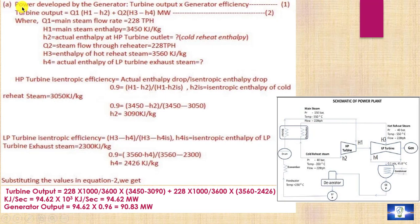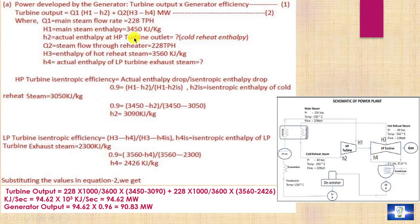The first question is the power developed by the generator. The power developed by the generator equals turbine output multiplied by generator efficiency. The generator efficiency is given as 96%. The turbine output is the work done by the HP turbine and the LP turbine. We need to calculate H2 and H4, since H1, H2s, and H3 are already given.